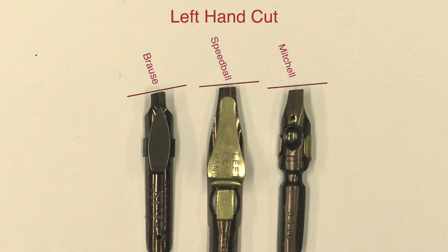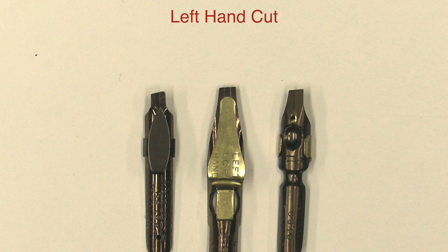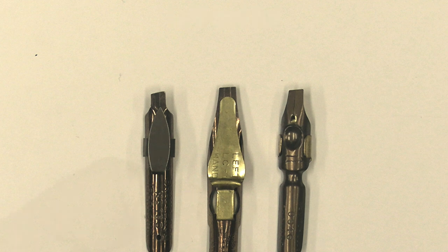The Brause, the Speedball, and the Mitchell nibs all come also with a left-handed cut that some left-handers will prefer. Once again, experience will let you know what feels best for you. Some left-handers will prefer these. Some will prefer a square cut nib. Some will actually prefer a right-handed cut nib. Try them all. You'll find what works best for you individually.